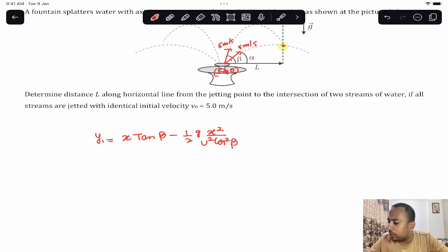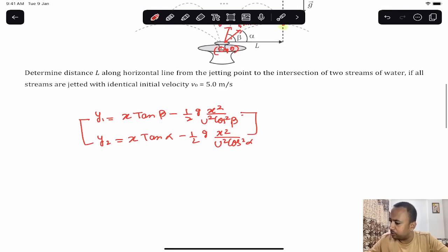So that will be one trajectory. The second trajectory will be: y equals x tan alpha minus half g times x squared divided by u squared cos squared alpha. Since x value is L and y is the same for both - both reach the same height - I can say that both equations are equal. Equation 1 equals equation 2.